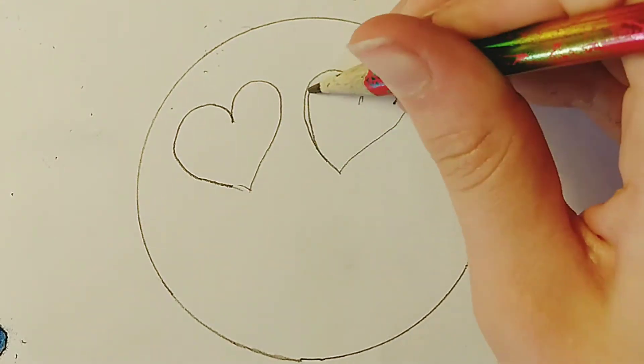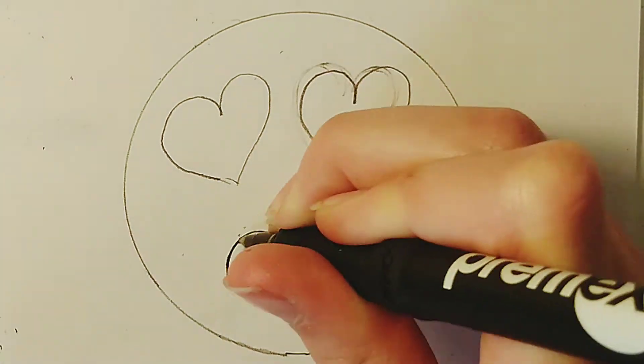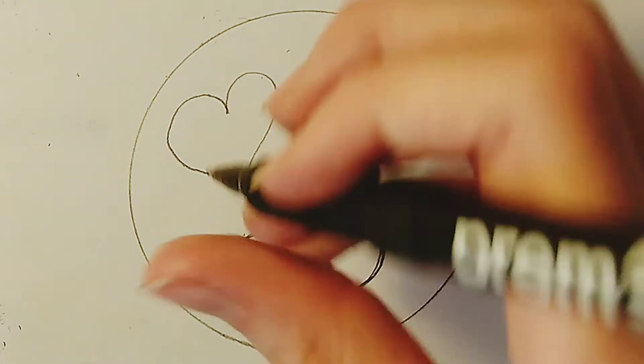So the next one has heart eyes so we need to draw those nice and big. And then the mouth is just a slightly curved smile that's open.